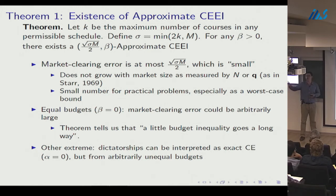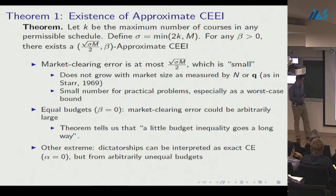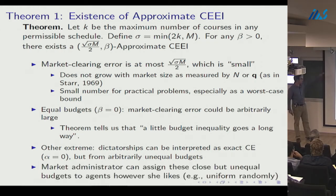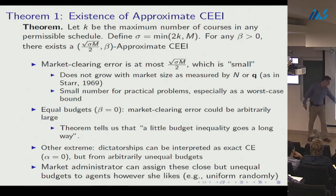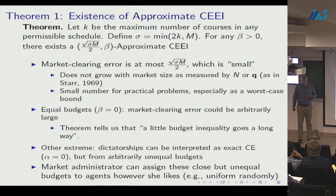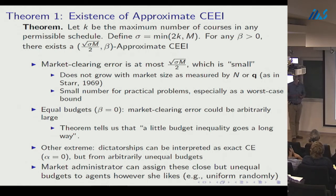The theorem also tells us the market administrator can assign close-but-unequal budgets however she likes — uniformly randomly, or based on a pre-existing priority order like seniority or GPA. Think of budgets as ranging between 1000 and 1000 + epsilon.